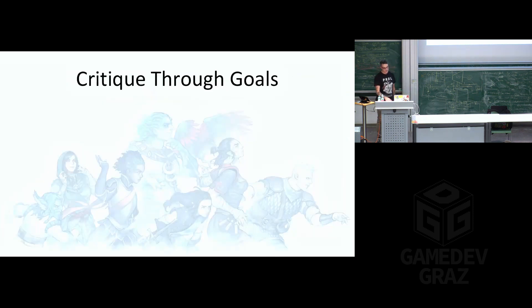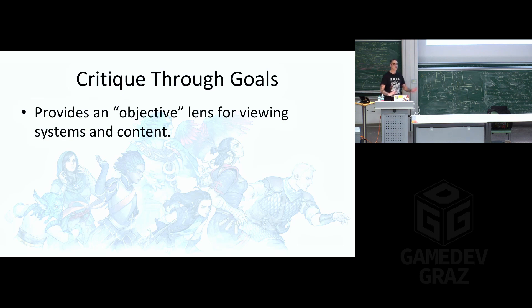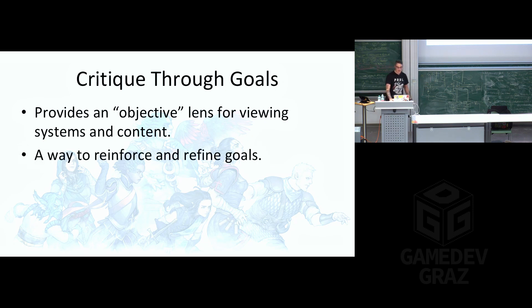Critiquing through goals — very, very important. When you critique any content, if you use goals as the way by which you judge whether a feature or piece of content is good, that's an objective lens for viewing those systems and that content. It allows people to step back from individual egos and opinions and really say: is this feature or this content helping us get closer to what we're trying to accomplish in this game? It's also a way to reinforce and refine goals. When you critique things by talking about the goals, you remind people that those goals exist — like: "remember six months ago when we said we were trying to make the player feel really frightened whenever this sort of thing happened? We're still trying to do that, so let's talk about the ways in which this level succeeds and fails to do that."